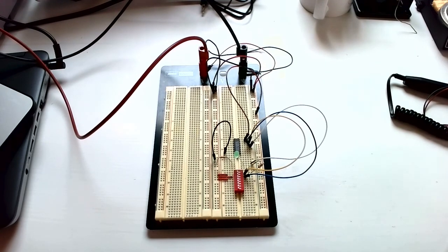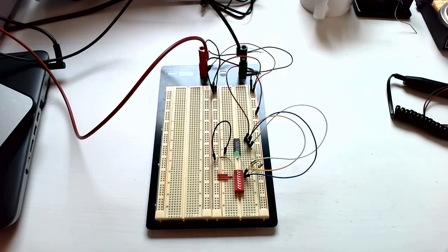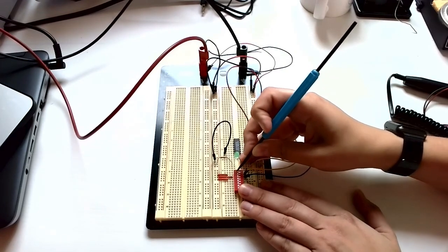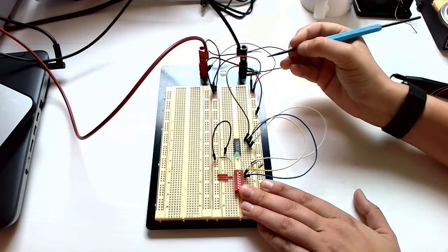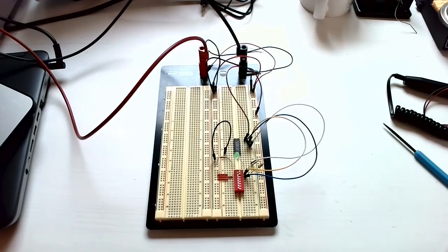The first thing we need to do is understand what our circuit is supposed to do, and only then can we diagnose problems with it. Here I have a very simple AND gate circuit. What I should have when I have a circuit in front of me is a truth table and a pinout or schematic diagram, because I need to know how to wire it up properly. When both inputs are 0, the LED should be off — and that's the case. When one or the other but not both inputs are 1, the LED should be off. When both inputs are 1, the LED should be on. You can see that is not the case here.